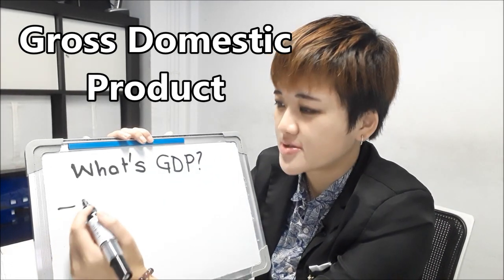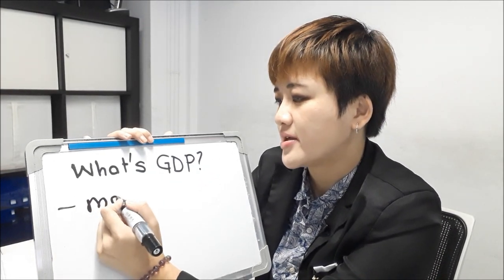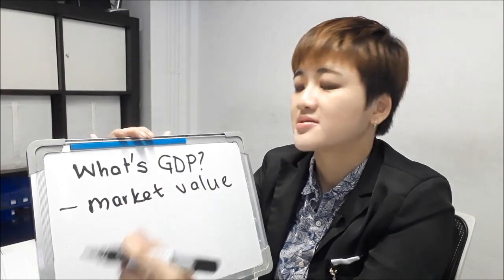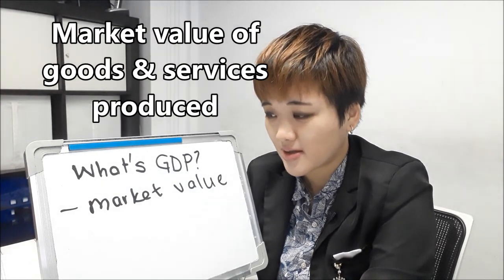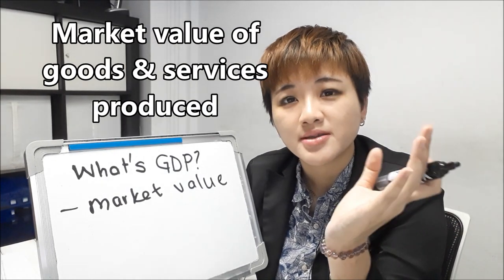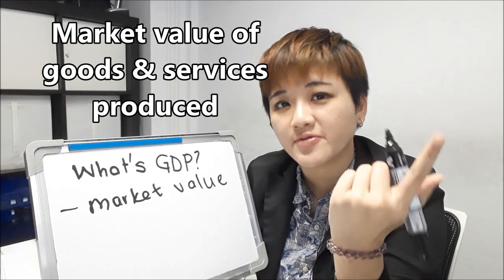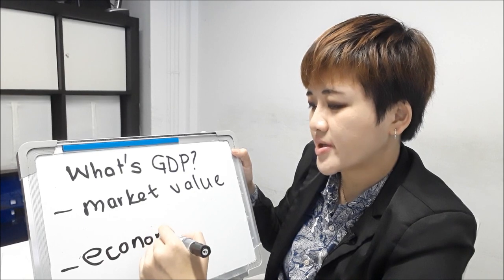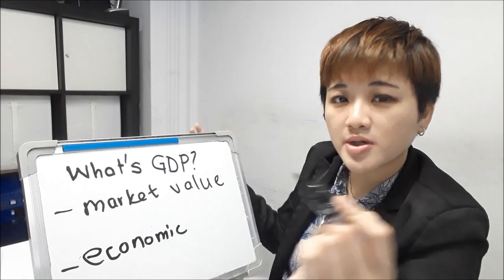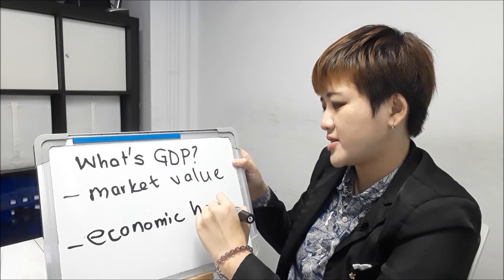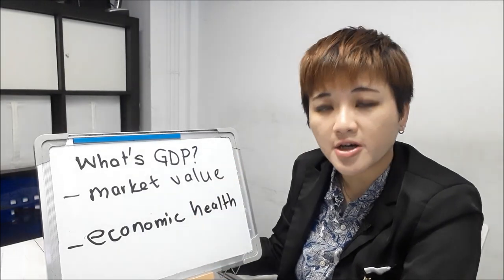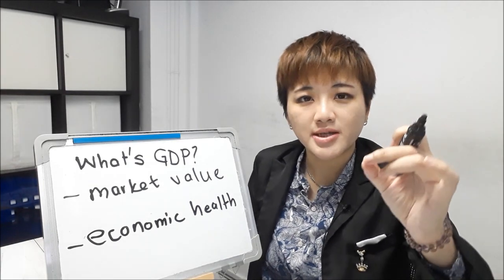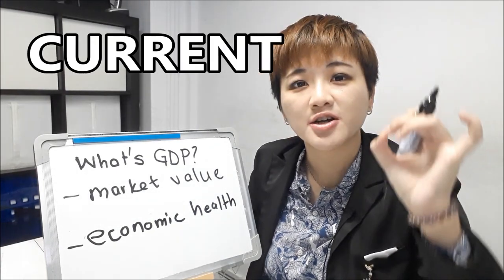When a country publishes the GDP, they are basically publishing the market value of all the stuff that is produced by the country. This includes things like products and services. So what does this tell you? It tells you how well an economy is doing right now. In other words, it gives you an idea of the current economic health of the country that you're monitoring. The keyword is current economic health.